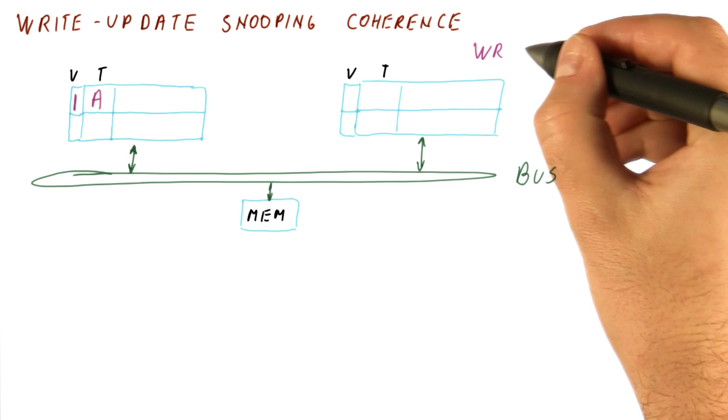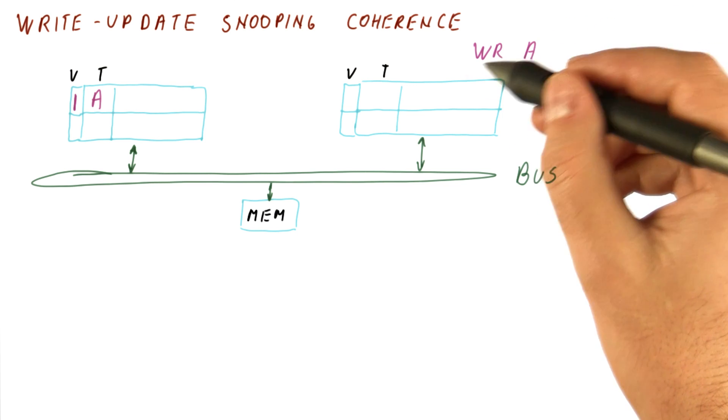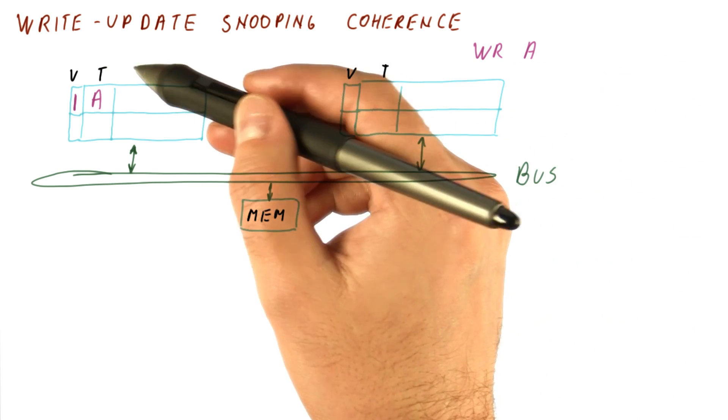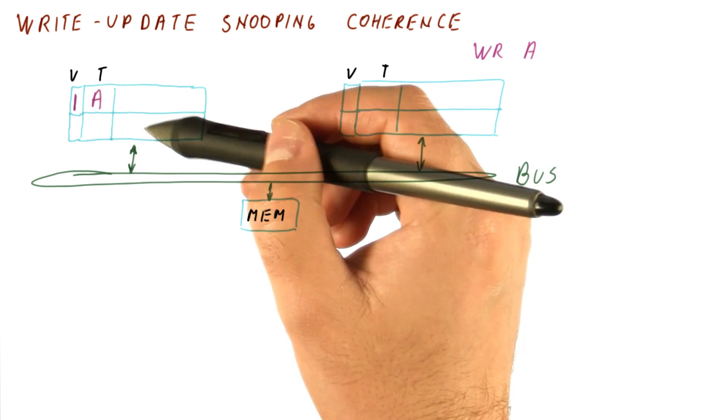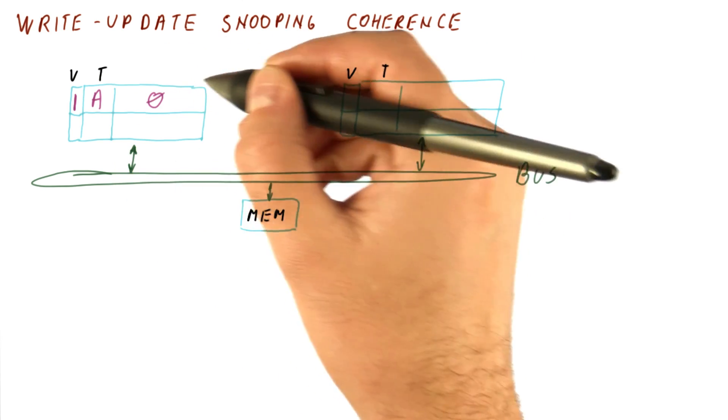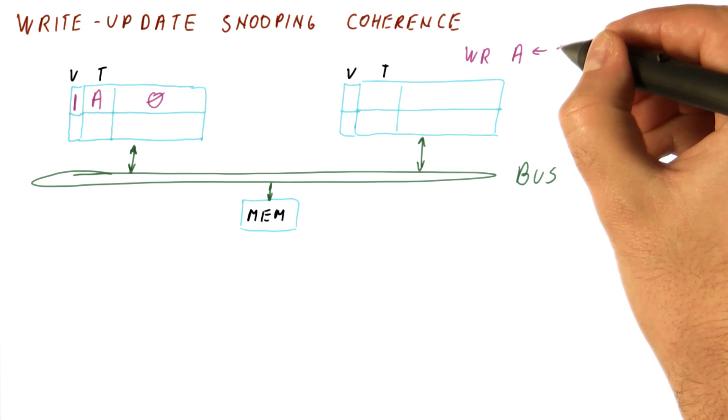Now let's say this processor writes to A. We have a situation where this processor, even if it does a write-through access directly to memory, a read on this processor would still read the stale value of A. Let's say the value we read here was zero, and now this processor writes one to A.